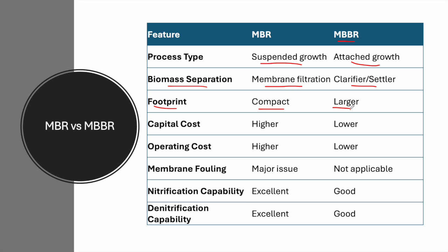We can have very small plants using the MBR. The MBBR also has a small footprint but is somewhat larger than the MBR. Both require less space compared to conventional activated sludge technology, but MBR is the smallest. For capital costs, the MBR is quite expensive — expect a high capital cost. The MBBR is lower in capital cost compared to the MBR, but both have high capital costs.